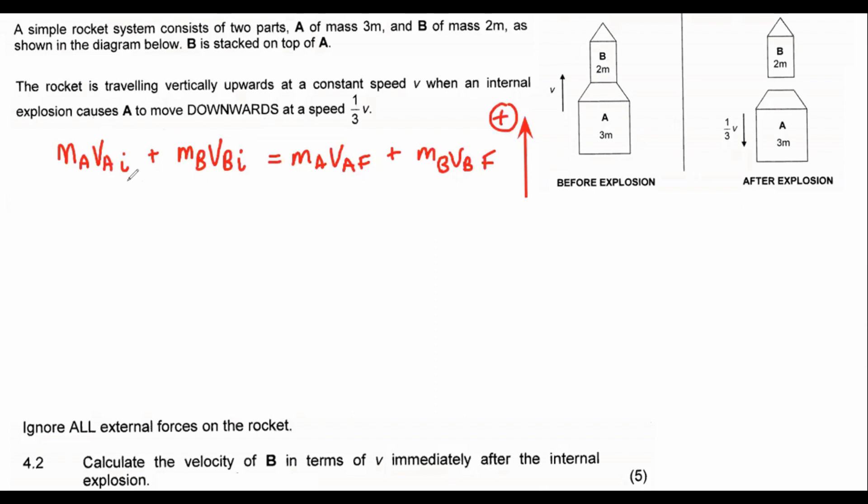So I'm going to say that the mass of A is 3m. The velocity of A is obviously going to be v plus the mass of B is 2m times by the velocity, which is v. Of course, you could have combined this and called it 5m. It doesn't really matter. Mathematically, you're going to get to the same point.